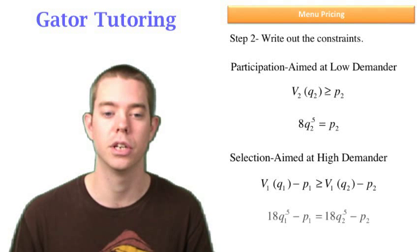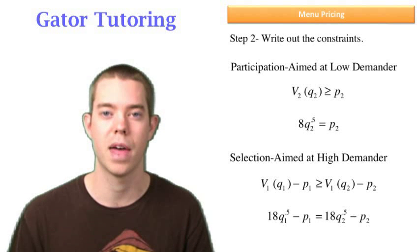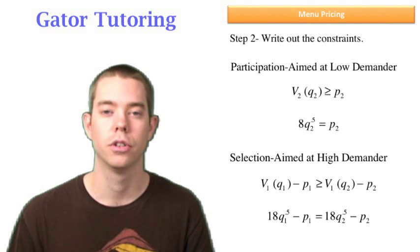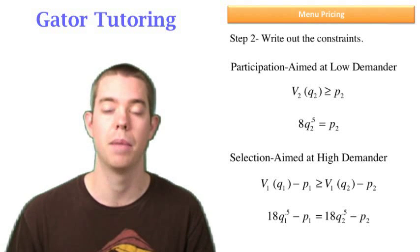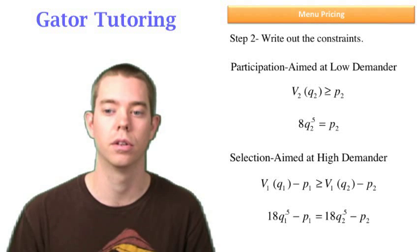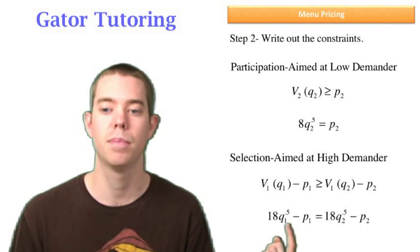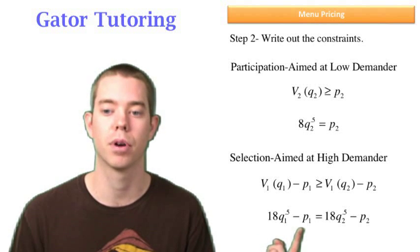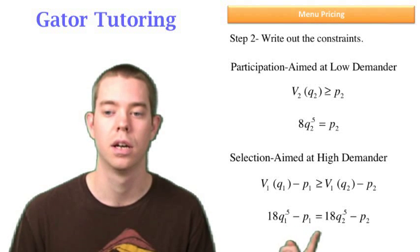So we can plug in our numbers here. Now be very careful to understand this. The value he gets is represented by that 18. The q1 in this case is that big box of gum. So if he buys that big box of gum at the price of that big box, we're going to make it, think about it as greater than, but we're going to set it equal to solve.